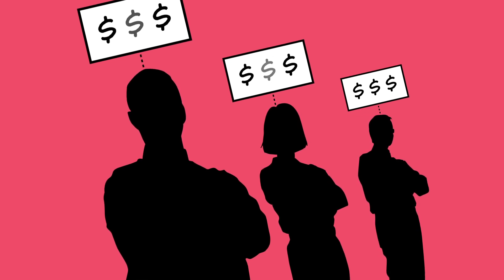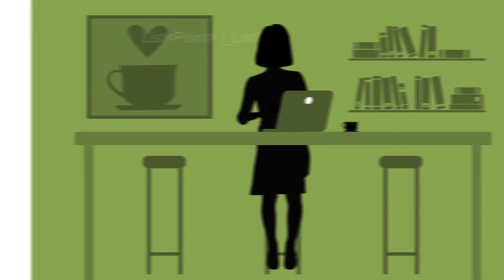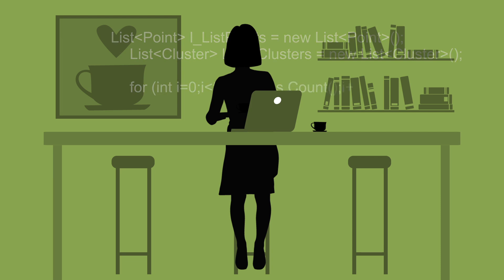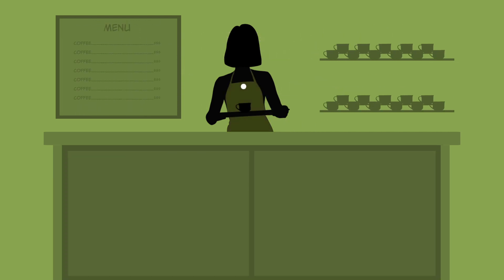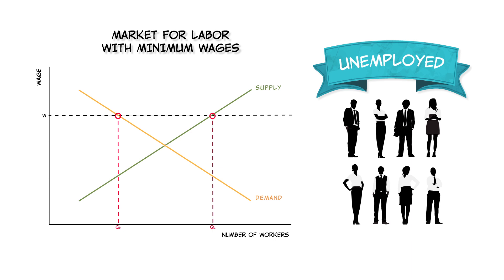Unemployed workers may also take time to learn or accept that their wages have fallen. Workers may also be afraid to accept a low-quality job for fear of being branded a low-quality worker. For example, if you're a computer programmer, you might not want to take a job at Starbucks, or at least you might not want to put it on your resume. So workers may want to search for a long time before taking a new job. Minimum wages and union contracts can also slow wage adjustment by putting legal or contractual limits on how low wages can go.